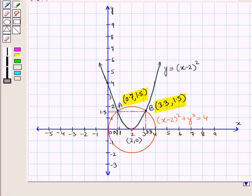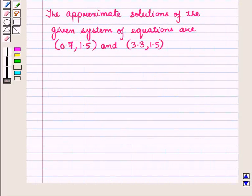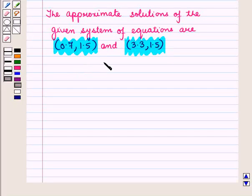The approximate solutions of the given system of equations are the ordered pair (0.7, 1.5) and the ordered pair (3.3, 1.5). This is the solution of the given question. That's all for this session. Hope you all have enjoyed the session.